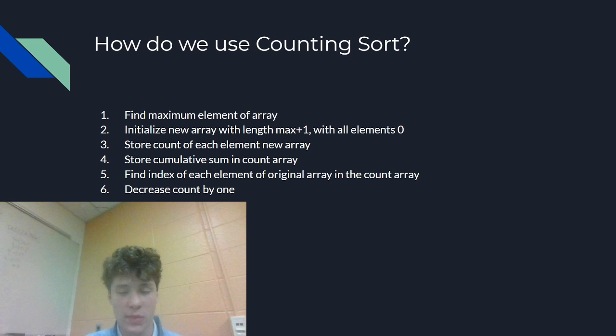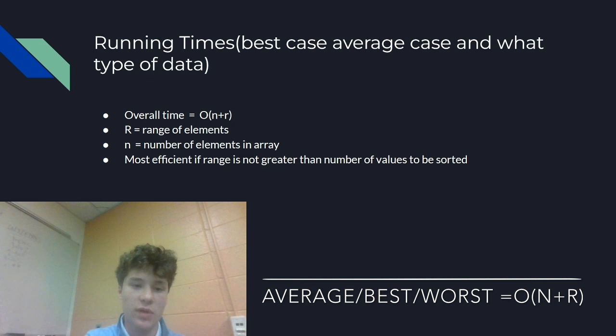This sounds like a lot, but it's very simple, and you'll see in the example that I provide. So just to touch on the running times of counting sort algorithm, the overall time is O(n + R), where R is the range of our elements and n is the number of elements in our array.